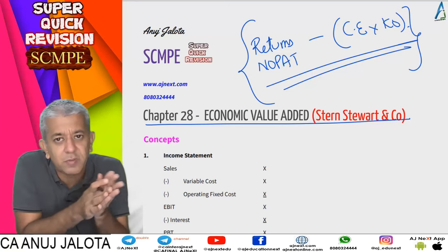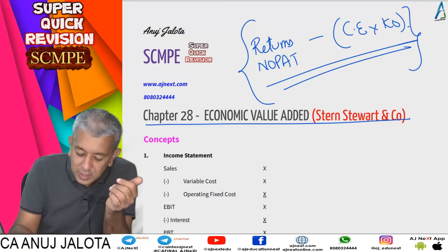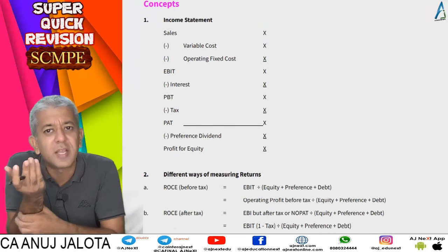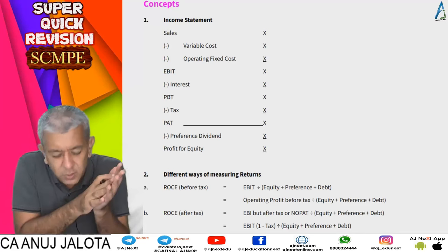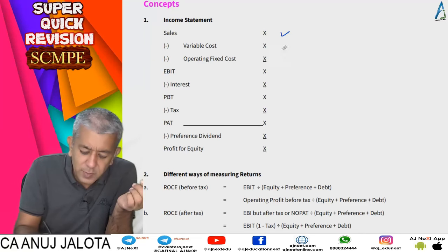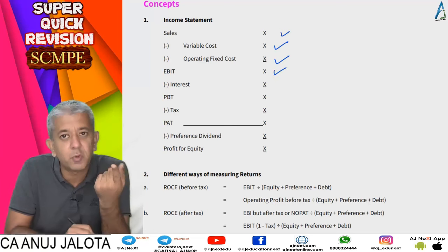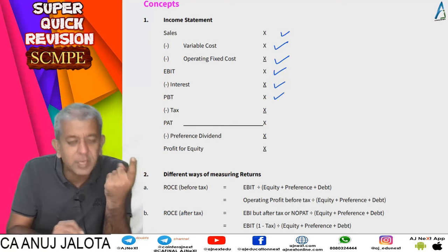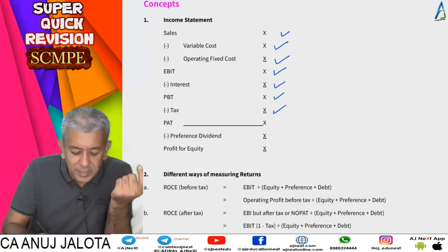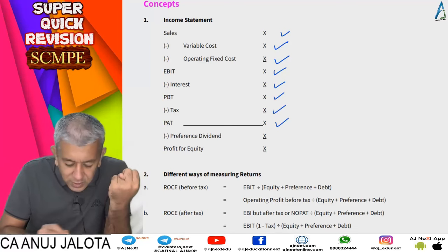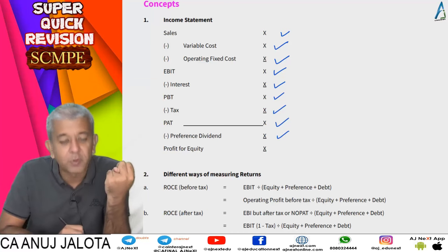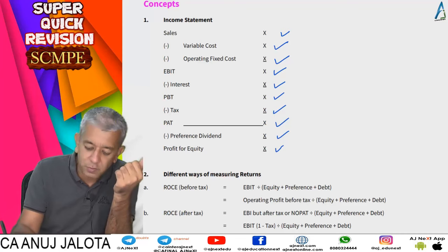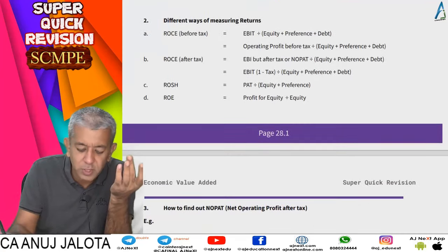Before going into EVA, let's recall the income statement. Sales minus variable cost minus operating fixed cost gives you EBIT. From there we subtract interest to arrive at EBT or PBT. We subtract taxes to arrive at PAT. Once we have PAT, we subtract preference dividend, and the last thing you get is profit for equity. This is your usual income statement.